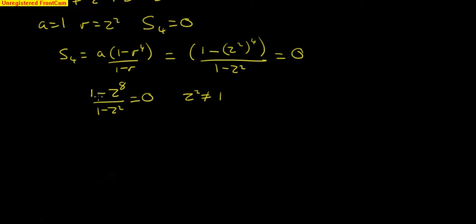From the top line equal to 0, therefore we have z to the power 8 must equal 1. And writing this in the form r e to the i theta, we have that this is equal to e to the i 0 plus 2n pi because we can do plenty of revolutions.